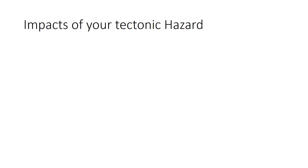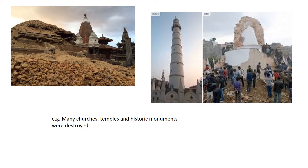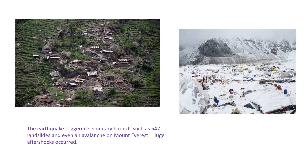Around 800,000 buildings including many homes were destroyed, leaving many people homeless and living in tents for several months. Many churches, temples, and historic monuments were also completely destroyed. This meant no place for people to worship, and since many of these sites were tourist attractions, in the medium to long term Nepal would lose significant tourist revenue from visitors to these monuments.